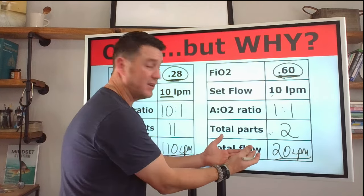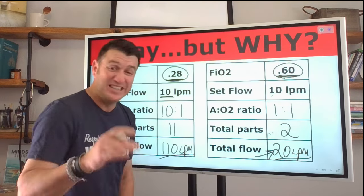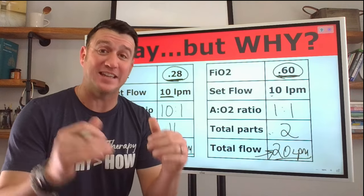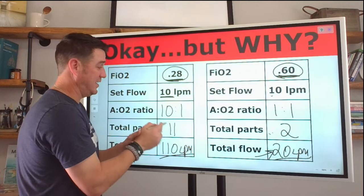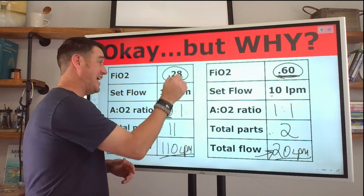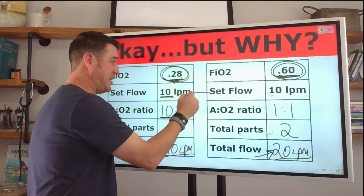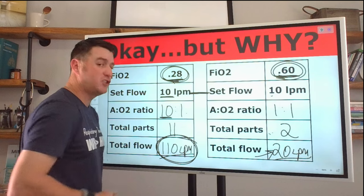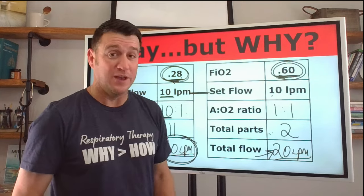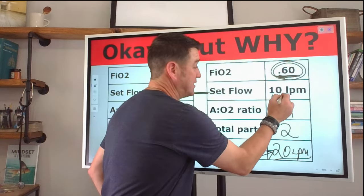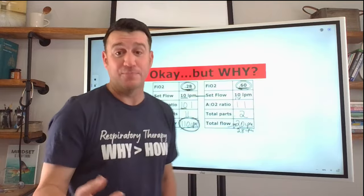But over here, you see, we may need to go higher than 10 because look, our total flow is significantly less because there's less air being entrained. See the difference? 28%. A lot of room air entrained to get it down from 100 to 28. A lower FiO2. Everything else is the same from the set flow, but we're delivering a much higher total flow. We probably don't need that much. This one, we may need a higher set flow. If we increase this set flow to 14 liters per minute, then we would now be delivering 28 liters per minute, and that might be more appropriate.